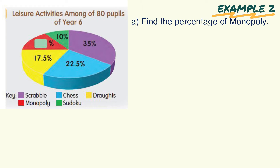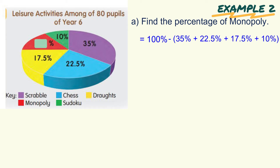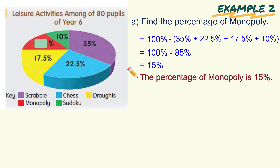A: Find the percentage of Monopoly. Remember, the total percentage of all the sectors in the pie chart is 100%. So to find the percentage of Monopoly: 100% minus the total percentage of Scrabble, Chess, Draft, and Sudoku. It will be 100% minus 85%, and the answer will be 15%. So the percentage of Monopoly is 15%.